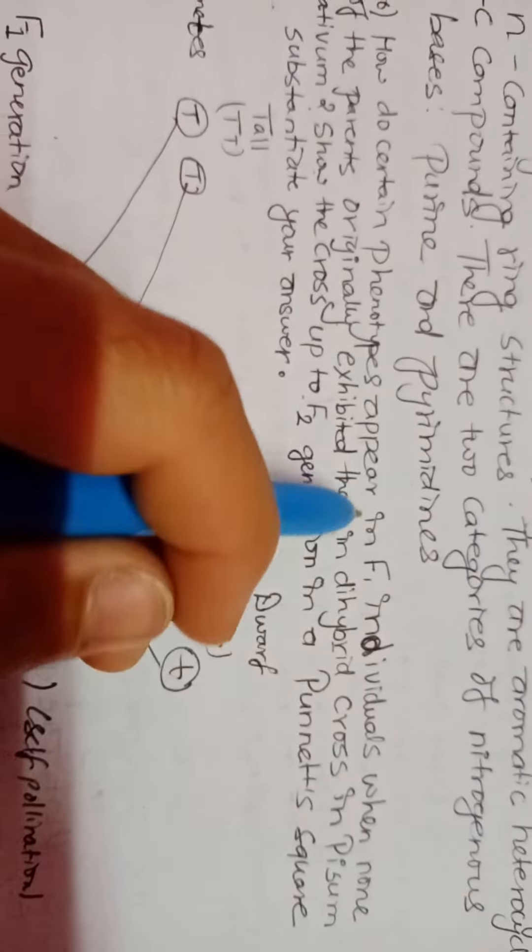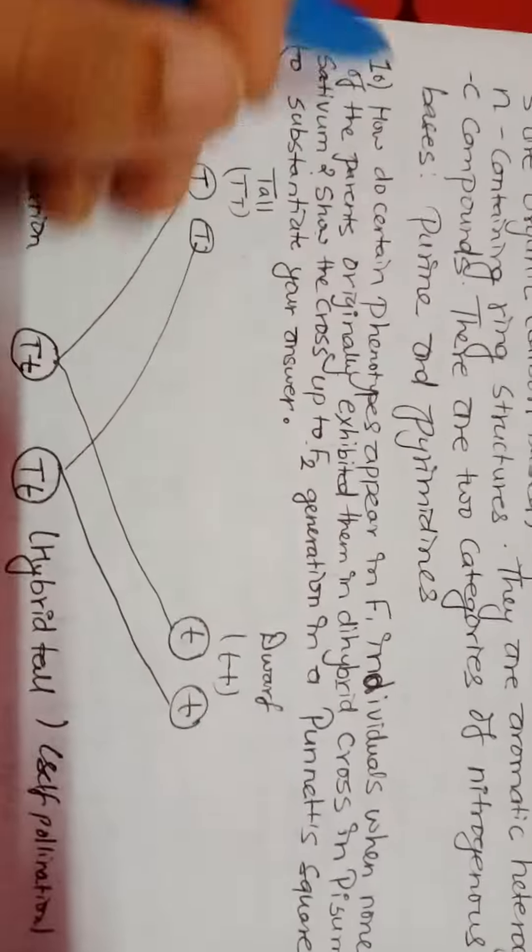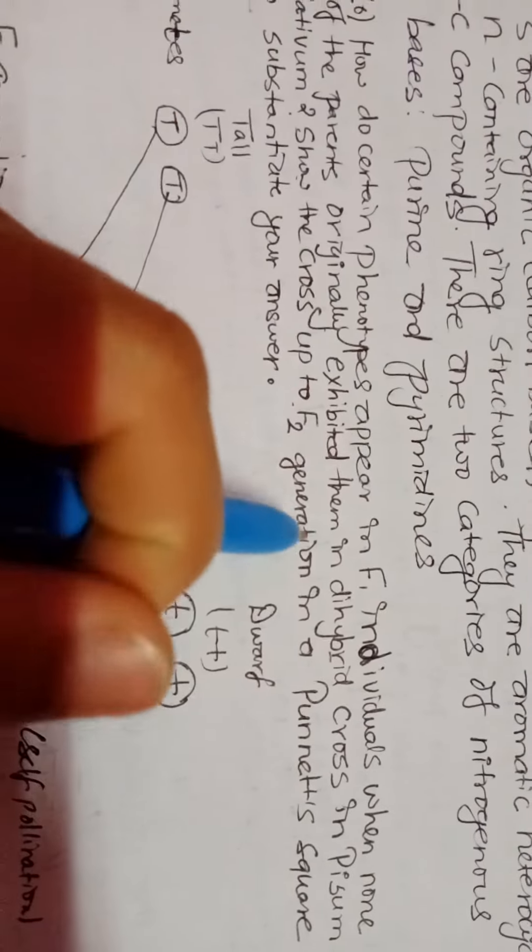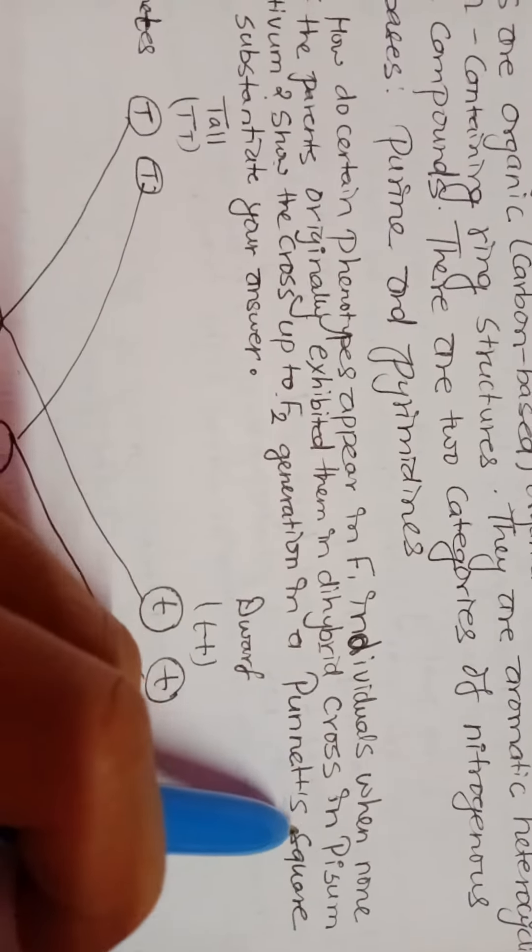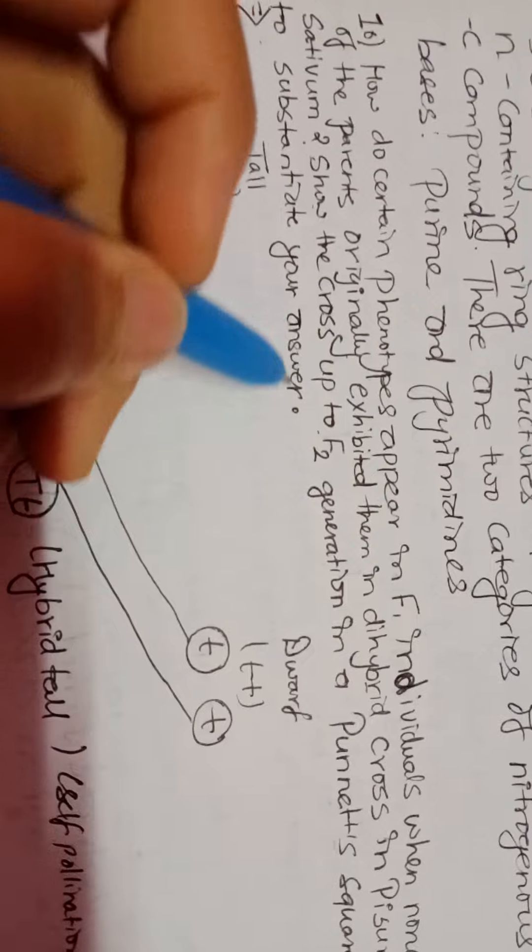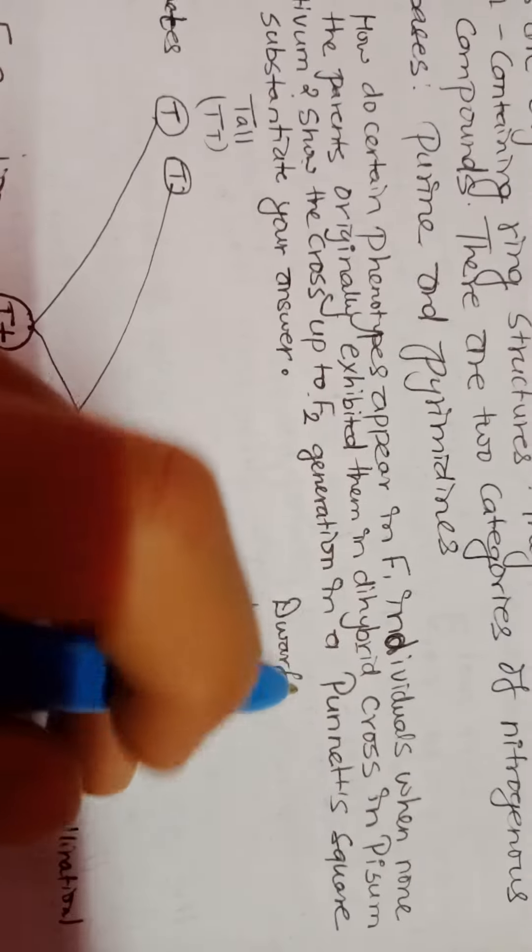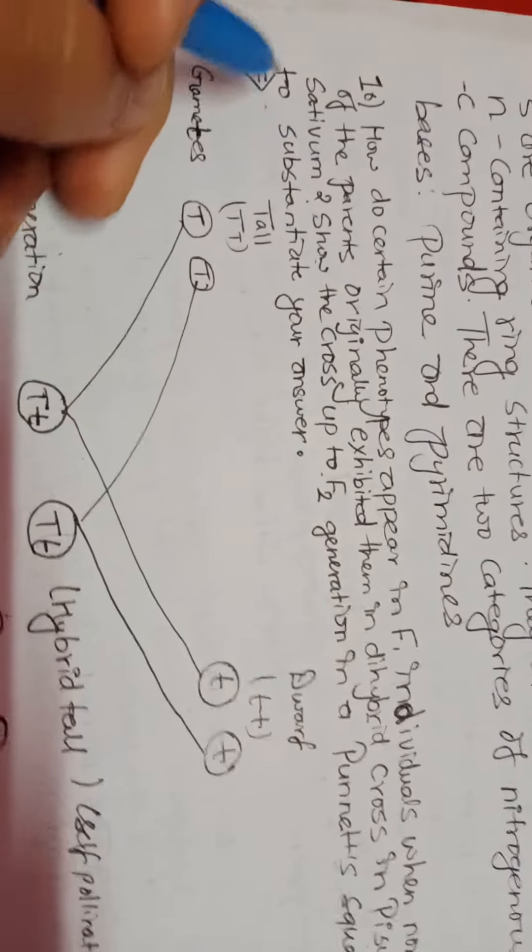How do certain phenotypes appear in the F1 generation when none of the parents originally exhibit them? In the hybrid cross in Pisum sativum, how does the cross up to the F2 generation in the Punnett square work? To answer this question, let's begin.